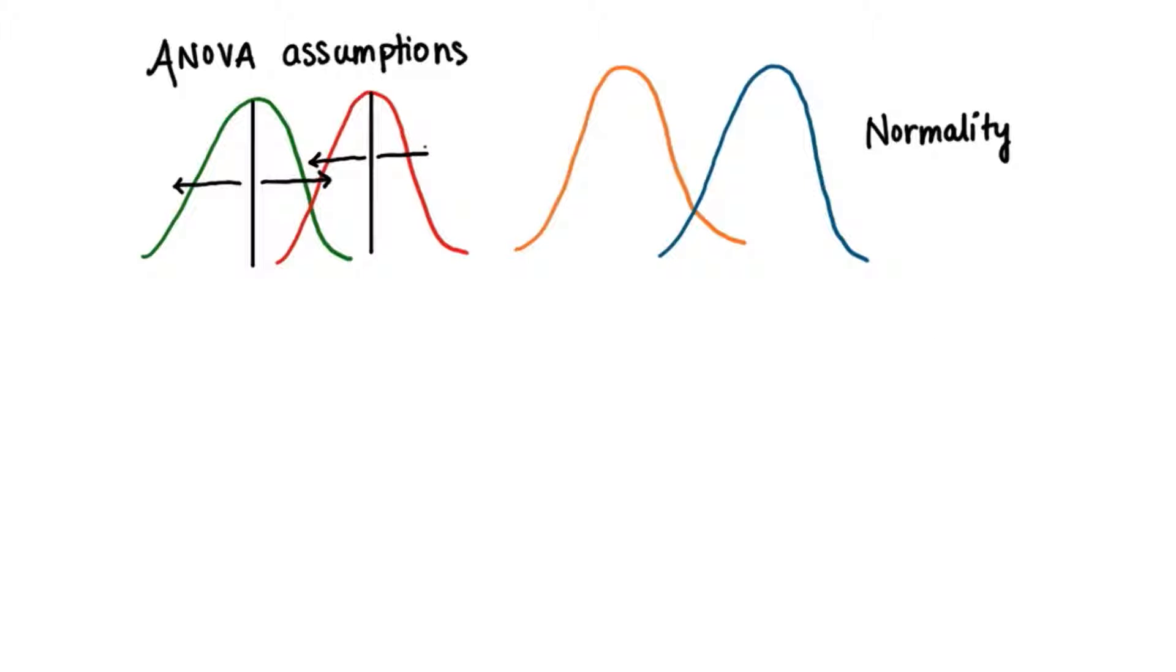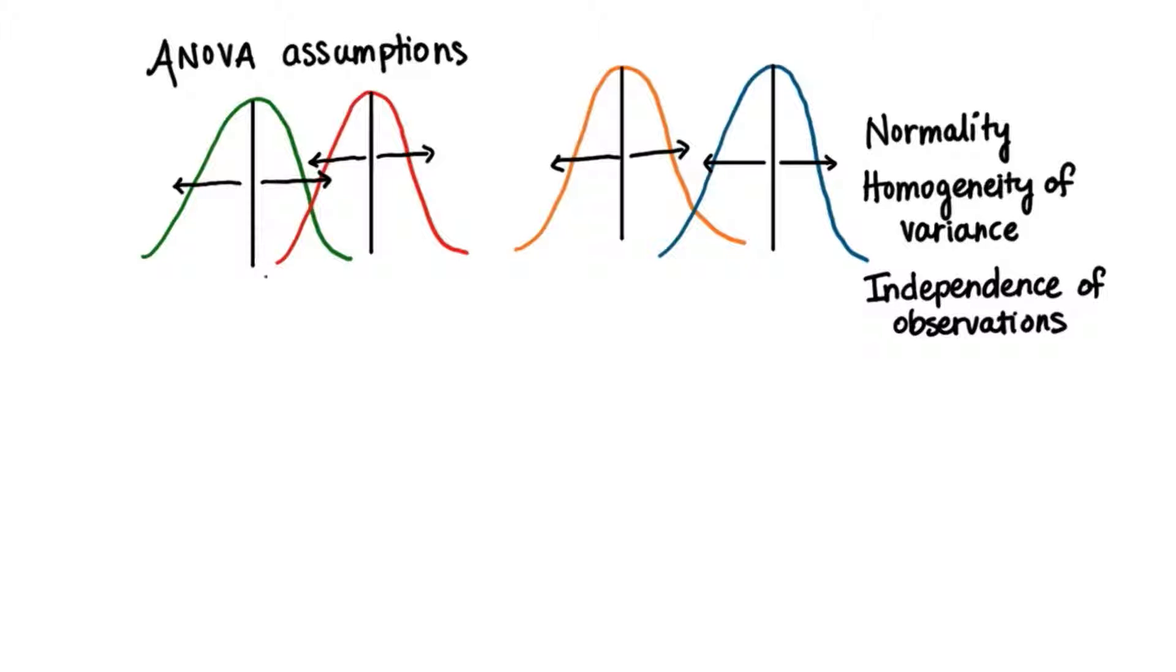Another is homogeneity of variance. The data come from populations that have equal amounts of variability. And finally, independence of observations. The results found from one sample won't affect the others.